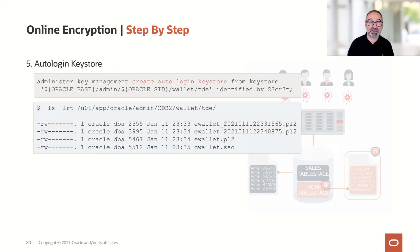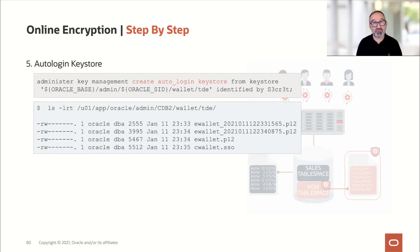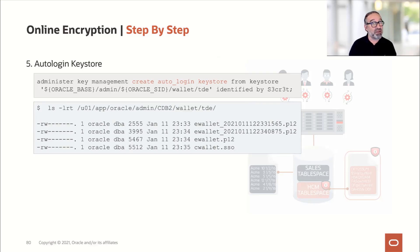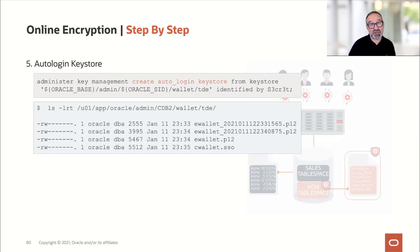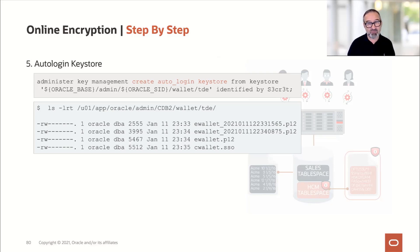Now it's a good idea — if your policies allow it — to make this an auto-login key store, because otherwise you have to specify your password all the time. ADMINISTER KEY MANAGEMENT CREATE AUTO_LOGIN KEYSTORE. This is also something we require for AutoUpgrade, because AutoUpgrade requires you to have an auto-login key store. If you don't want it permanently, you can revert it later. On disk, you'll now see more files: a cwallet.sso and separate ewallet key stores for each container.